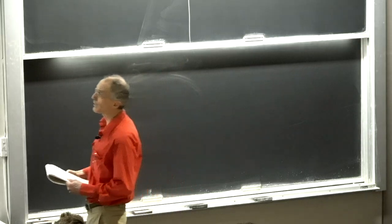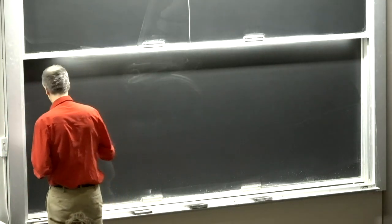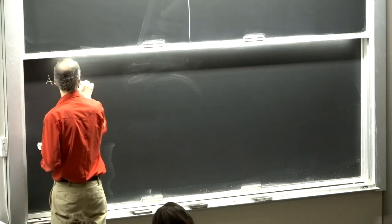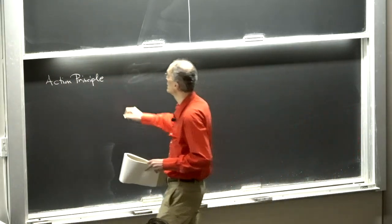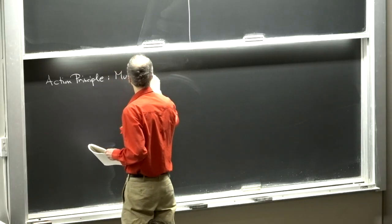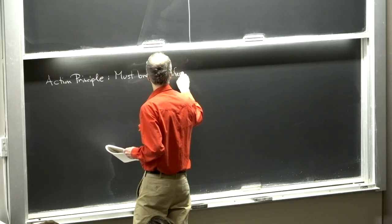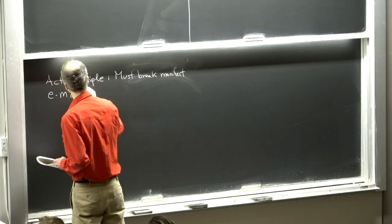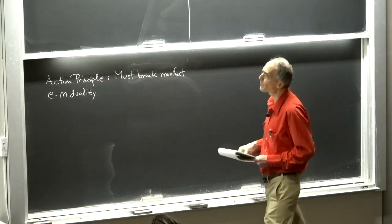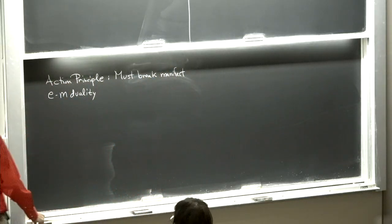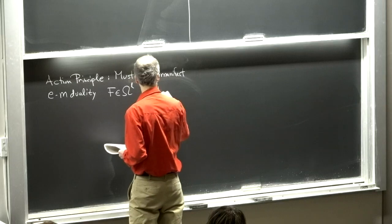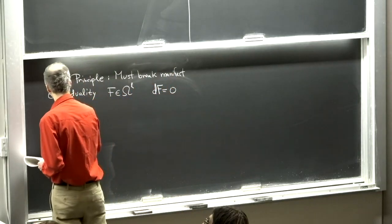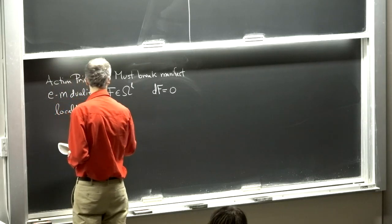I've introduced these theories by their equations of motion. It's natural to ask: what about an action principle? Interestingly, to write an action principle we must break manifest electromagnetic duality — we have to prefer F over F̃. So if F ∈ Ω^L, I'll prefer F and solve dF = 0. Locally, F = dA on some contractible neighborhood. In general, because F is just some closed L-form, I cannot write F = dA globally.